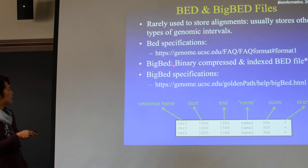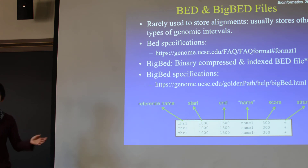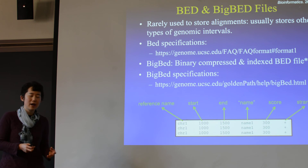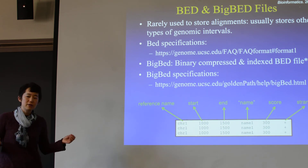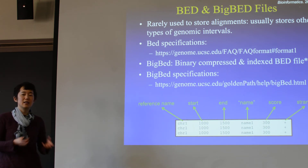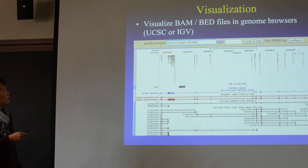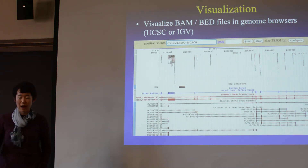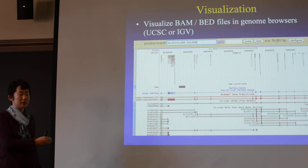There are also bigBed files, which are indexed files similar to BED — like the BED versus BAM relationship. They're more compressed and genome browsers can access them and search very quickly. Once you have the BED file already mapped to the genome, you can display it on genome browsers.